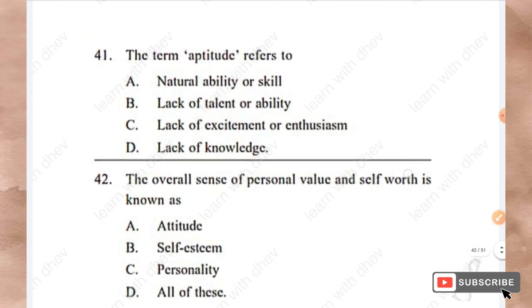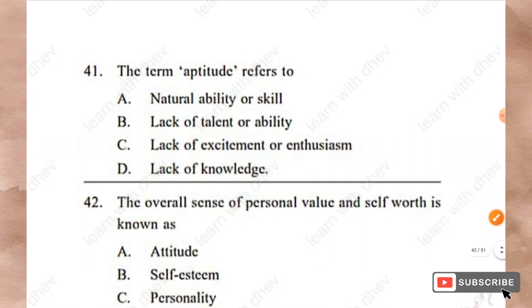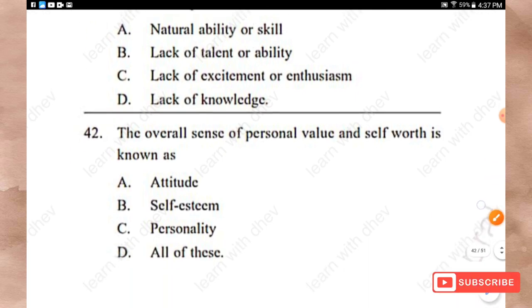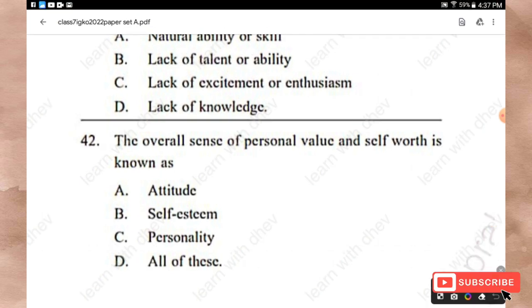The next section is Life Skills. Question 41: The term 'aptitude' refers to what? Options: Natural ability or skill, lack of talent or ability, lack of excitement or enthusiasm, lack of knowledge. The right answer is Option A — natural ability or skill. Question 42: The overall sense of personal value and self-worth is known as what? Options: Attitude, Self-esteem, Personality, All of these. The right answer is Option B — Self-esteem.